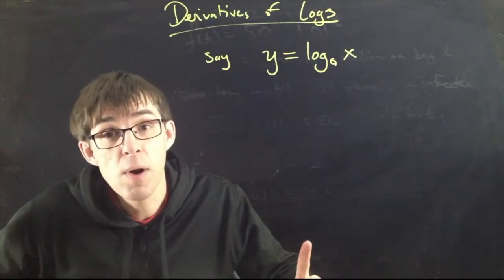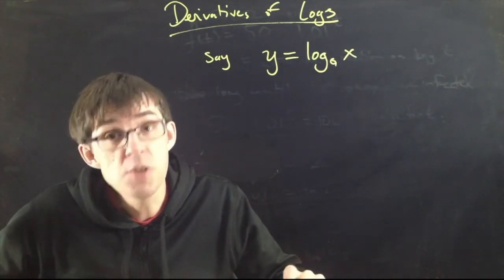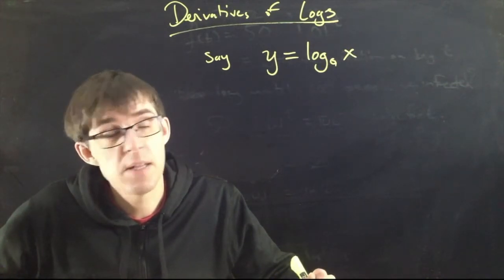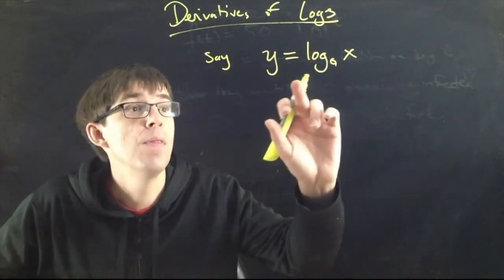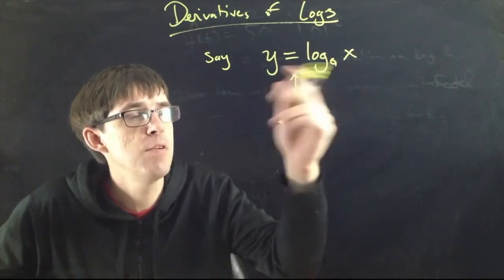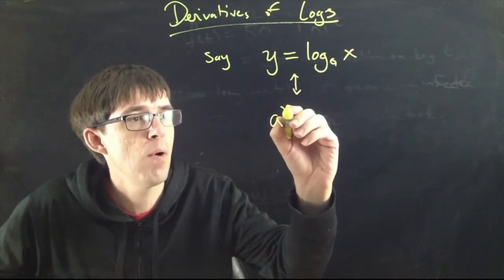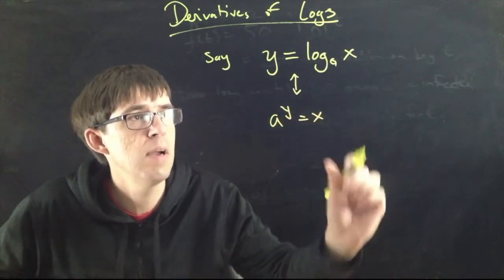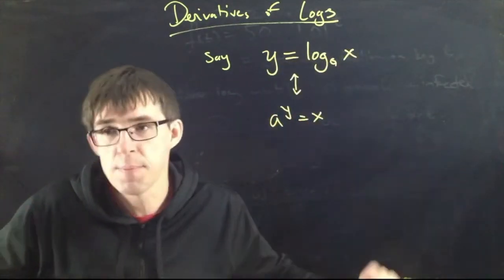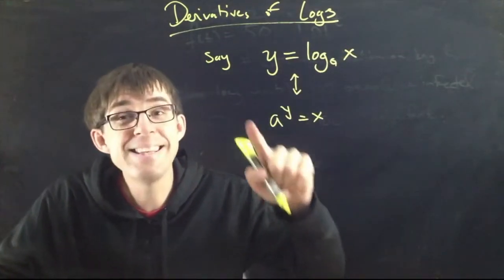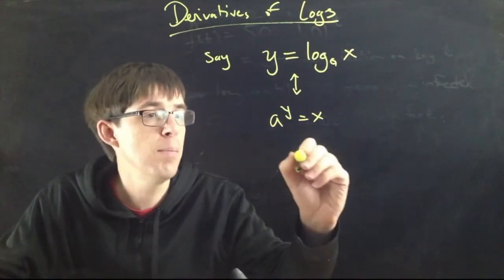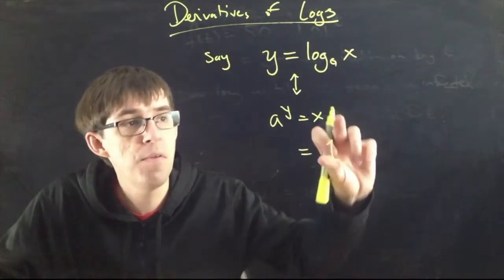We're going to do a little trick here. We already know how to find the derivative of an exponential function. The derivative of a to the power x is a to the power x times ln of a. Remember, this logarithm is the same as saying — you can rearrange it as: a to the power y equals x. Log base a of x means 'a to what power equals x?' If that equals y, then a to the power y equals x. We can take the derivative on both sides. The right-hand side becomes 1, because the derivative of x is 1.